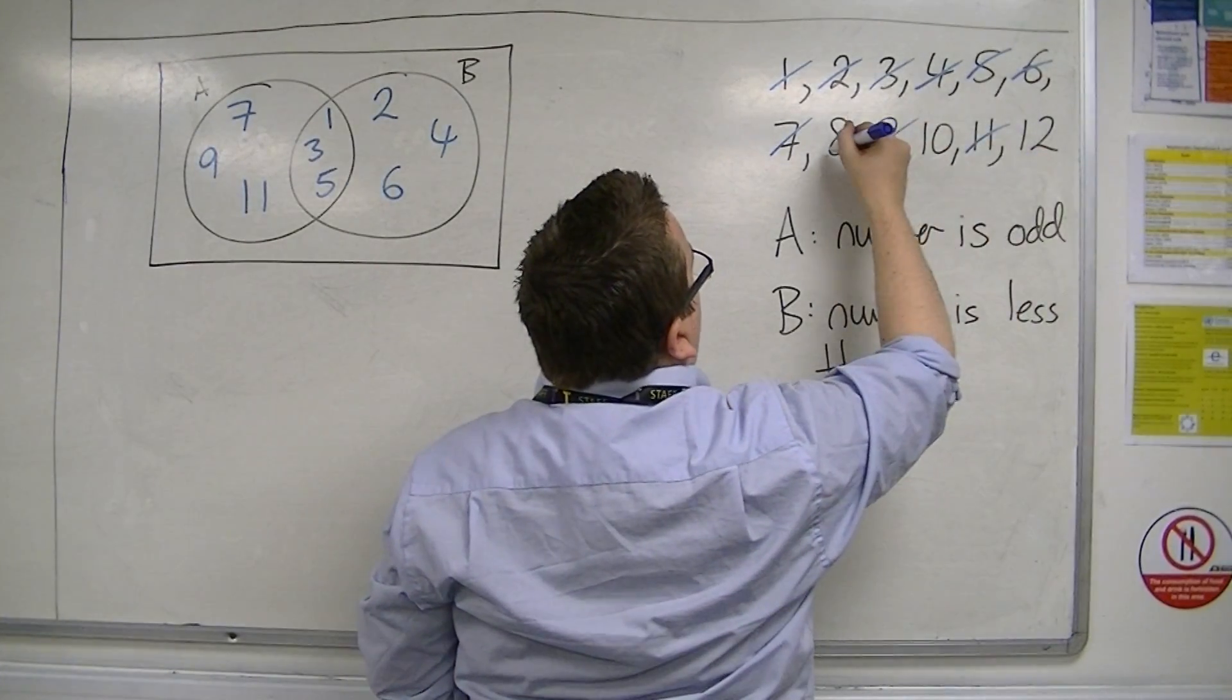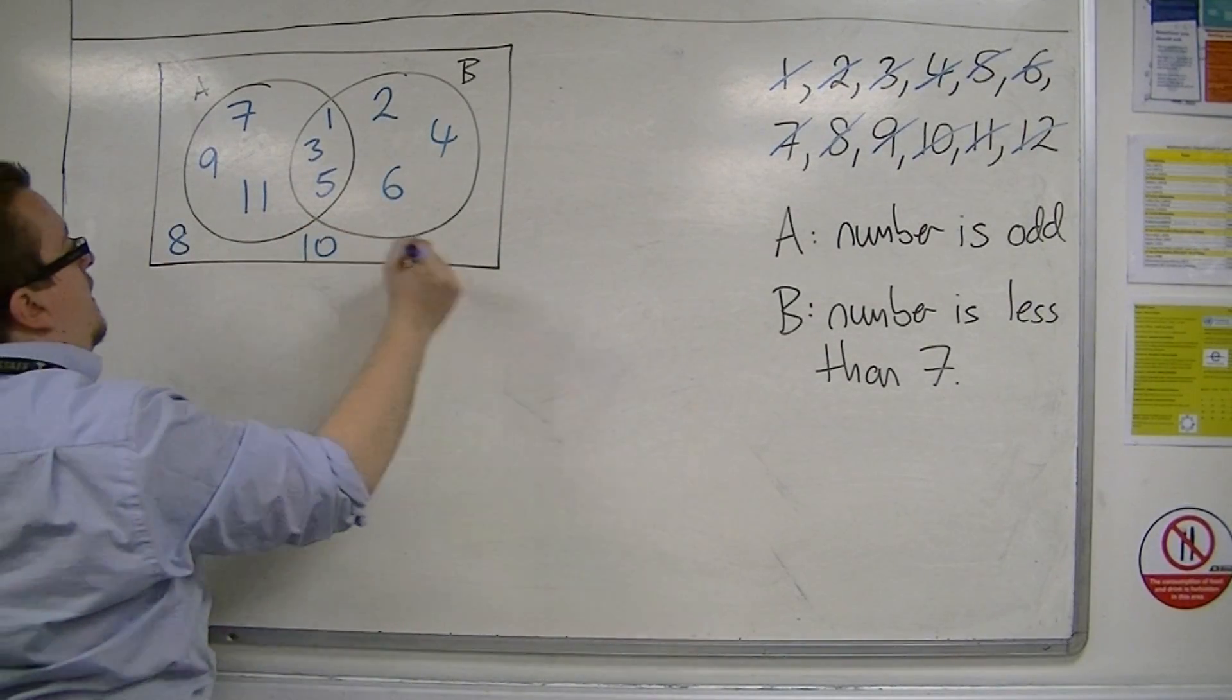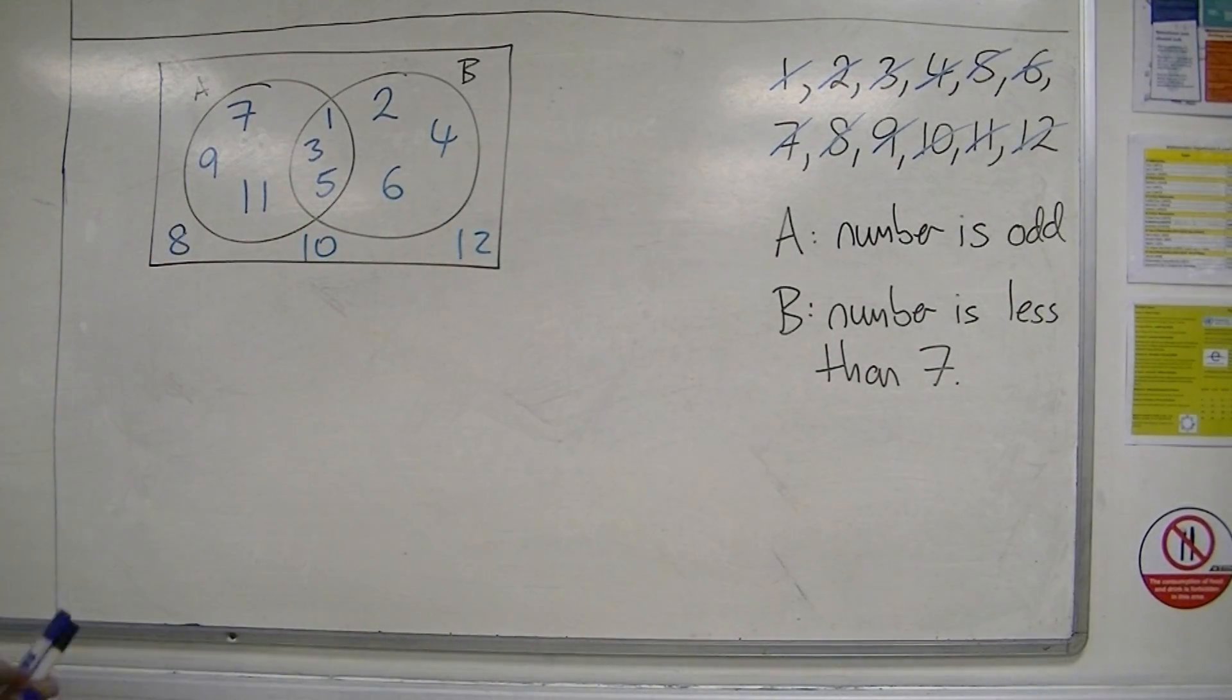And what we've got left is 8, 10, and 12 that don't fit in. So 8, 10, and 12 go on the outside.